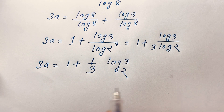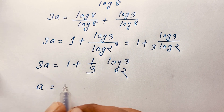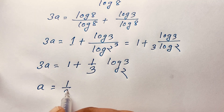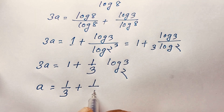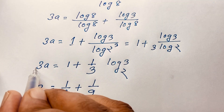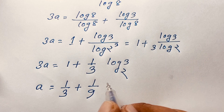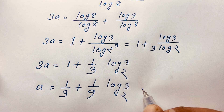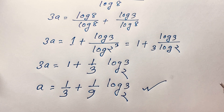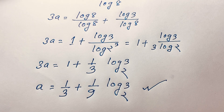So if I divide both sides by 3, I can say here is A equals one-third plus one-ninth log 3 base 2, because I move this 3 into the denominator here and here is log 3 base 2. So this is our final answer in this math olympiad question.